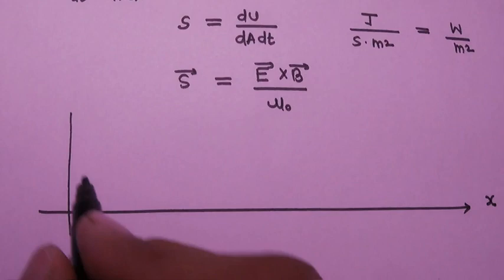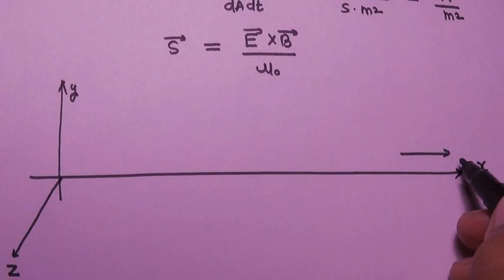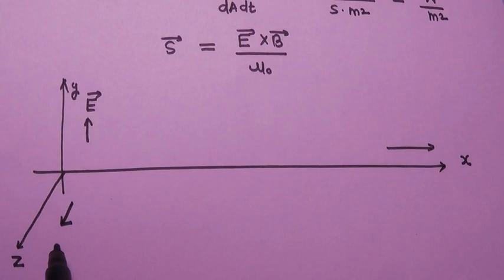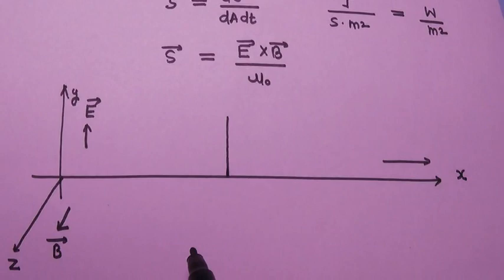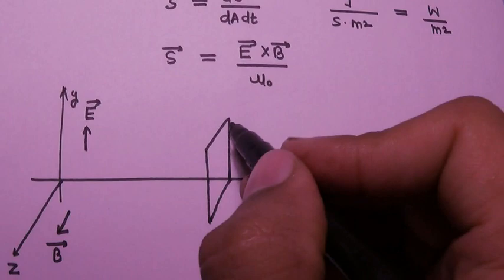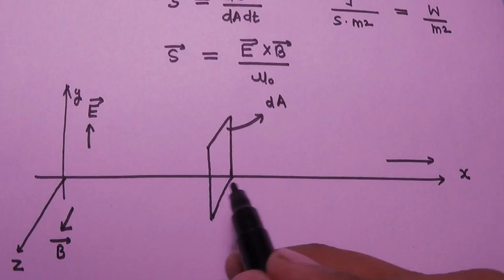This is our x-axis, this is our y-axis, and this is our z-axis. The electromagnetic wave is propagating along the x-axis, the electric field is oscillating along the y-axis, and the magnetic field is oscillating along the z-axis. Now consider an infinitesimally small area dA that is perpendicular to the x-axis.